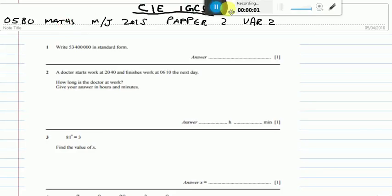In this video, I am going to solve paper 2 of May-June 2015, variant 2. Question number 1. Write 53,400,000 in standard form.